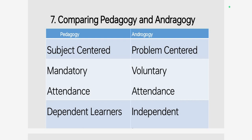For instance, in pedagogy the curriculum is subject-centered and course-centered, while in andragogy it is problem-centered. In pedagogy, learning is mandatory — children should learn what schools teach them. But in the case of andragogy, it is voluntary. Adults should know the reason why they learn, should be motivated, need a deep need in order to learn, and learning takes place based on their willingness.